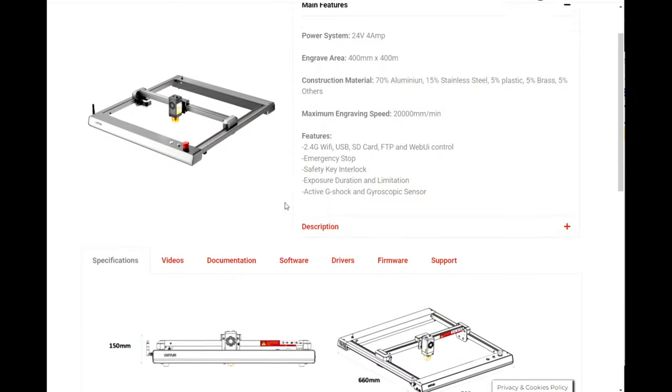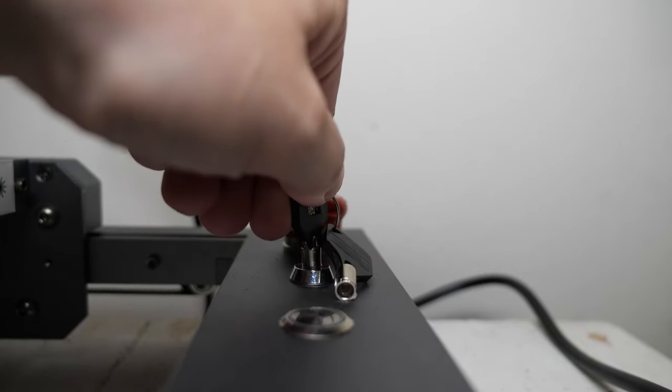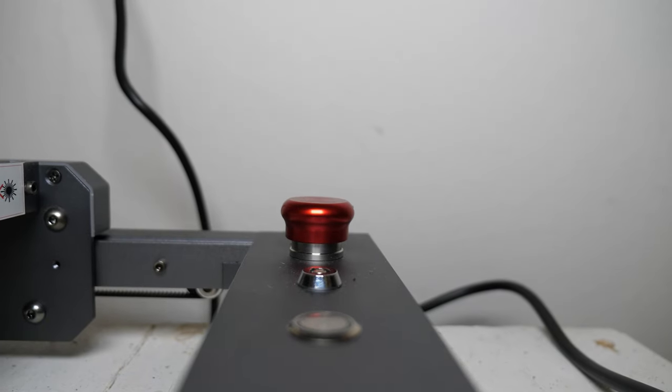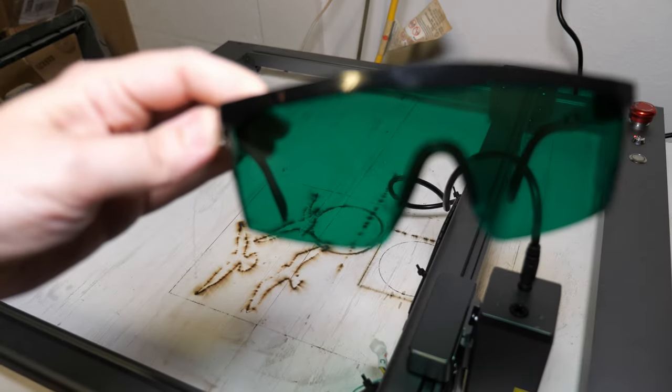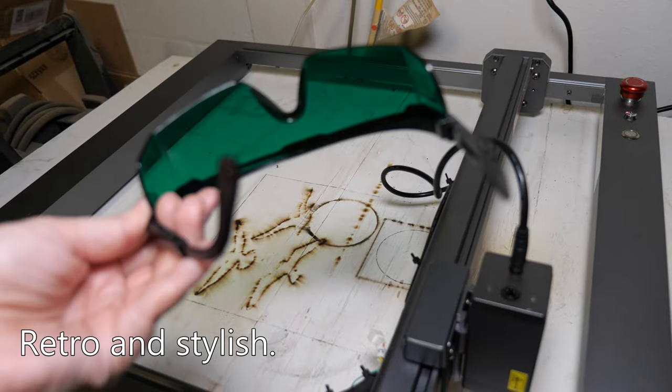Safety is pretty important when it comes to using something like a high-powered laser. The Auteur Master 3 comes with a key that locks the laser to prevent unauthorized people from using it. It also has an emergency stop button, a laser beam safety guard, and it comes with a pair of laser safety glasses that are required for using such a high-powered laser.